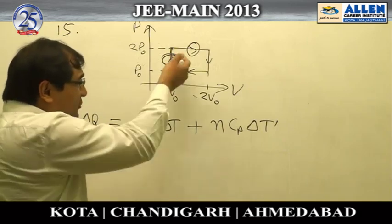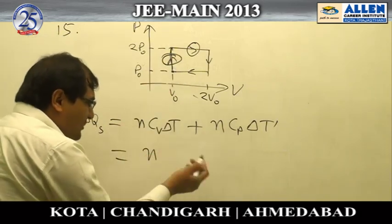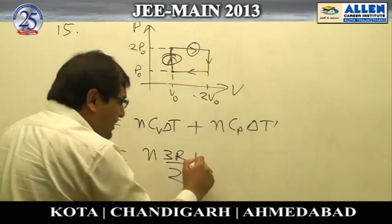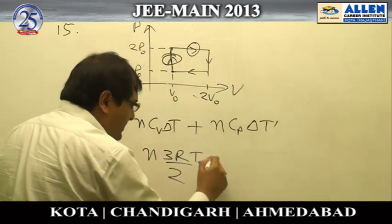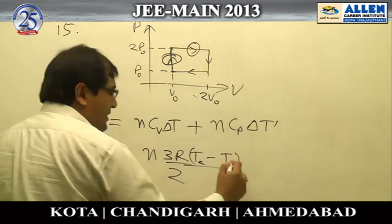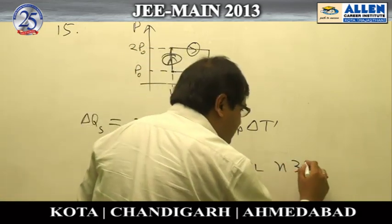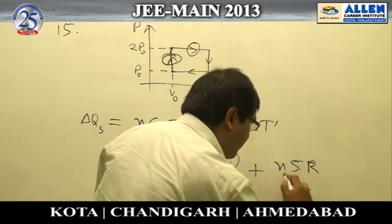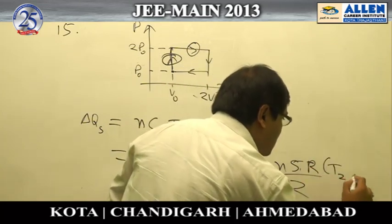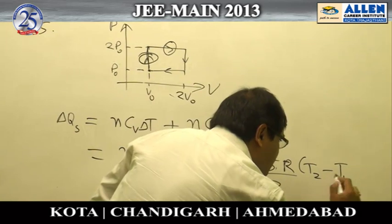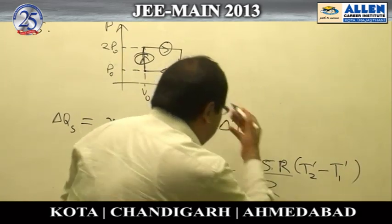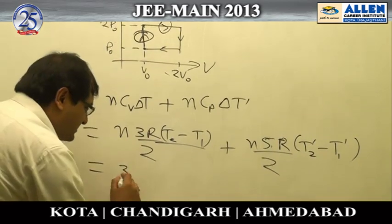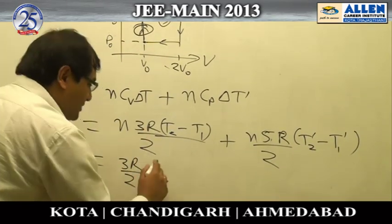For a monatomic gas, CV = 3R/2. The isochoric heat term becomes N·(3R/2)·(T₂ − T₁), and the isobaric term uses CP = 5R/2, giving N·(5R/2)·(T₂ − T₁) for that part of the cycle.